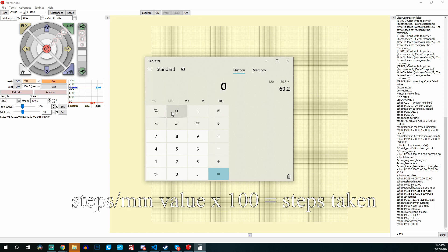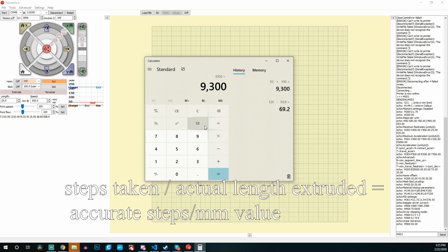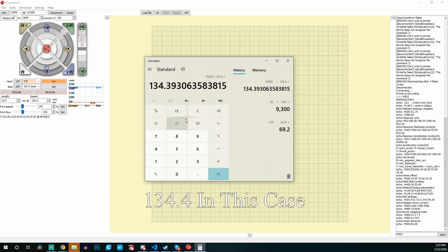Next you're going to take what your current e-step value is, which mine was 93, and multiply that by 100, which gives you the actual steps taken. In my situation that's 9300. Now take that value, in my case 9300, and divide it by the actual length extruded. The value that gives you is the new accurate steps per millimeter value, which is what you're going to change your e-steps value to.